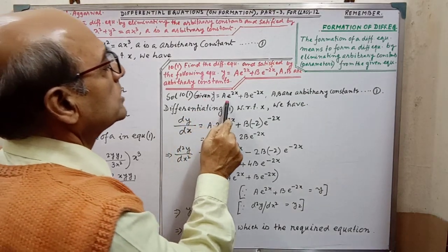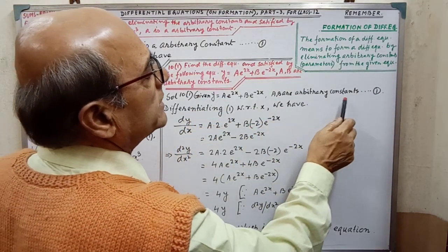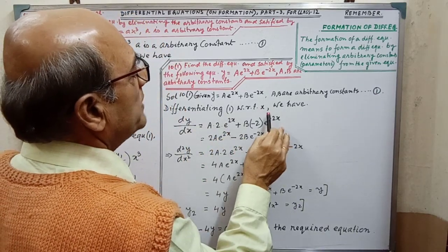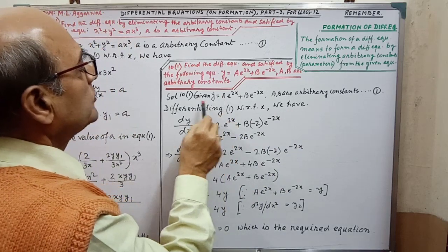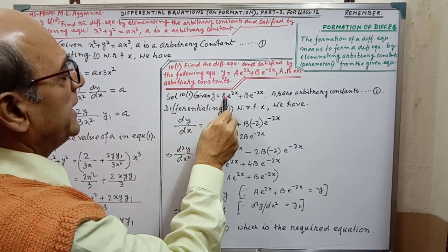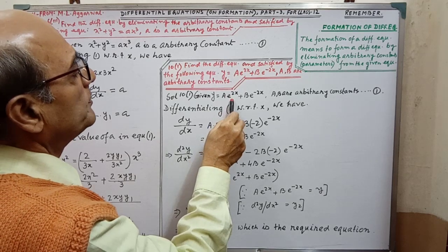So, solution given y equal to this, a, b are the arbitrary constants and this is denoting by 1. Differentiating 1 with respect to x, we have to differentiate this expression. That is dy by dx, a is the constant.